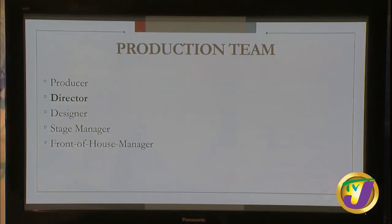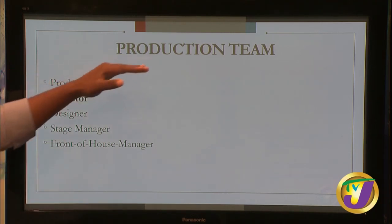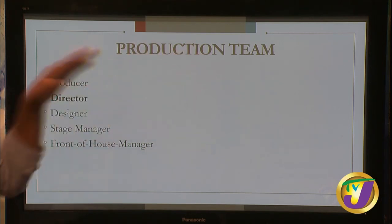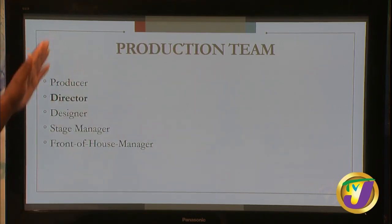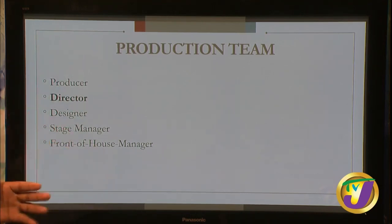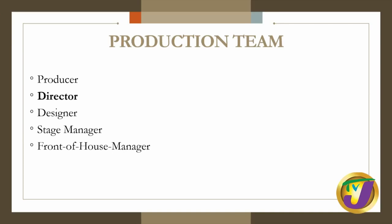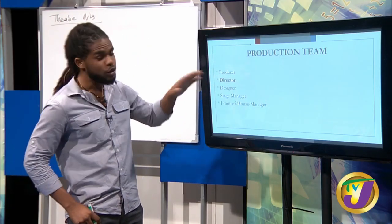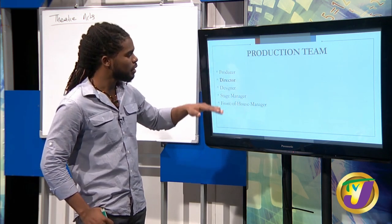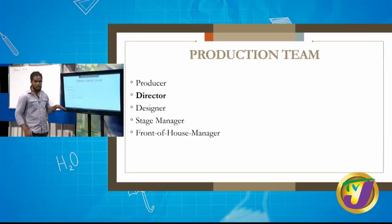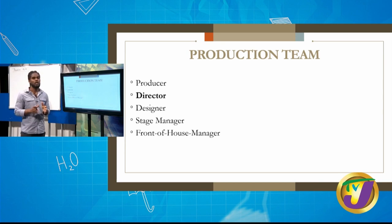In looking at the director's role and responsibility, we first have to look at the production team — the people responsible for executing an effective production. We have the producer, who is the one with the money ensuring everybody gets what they need to get the job done. Then we have the director, highlighted in bold as a focus of our lesson. We also have the designer, stage manager, and front of house manager. Each of these roles is very important to an effective production.